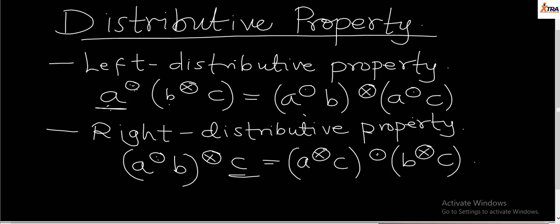In a case where you are not told whether to use left or right distributivity, we use the left distributivity property as our standard. If you are told which one to use, then you use whichever you are instructed. Once there is no instruction, we use the left as the standard. What we need to know is that distributivity uses three variables, just like associativity and unlike commutativity. It is just like an expansion process, and we will be solving a question based on this principle in the next class.